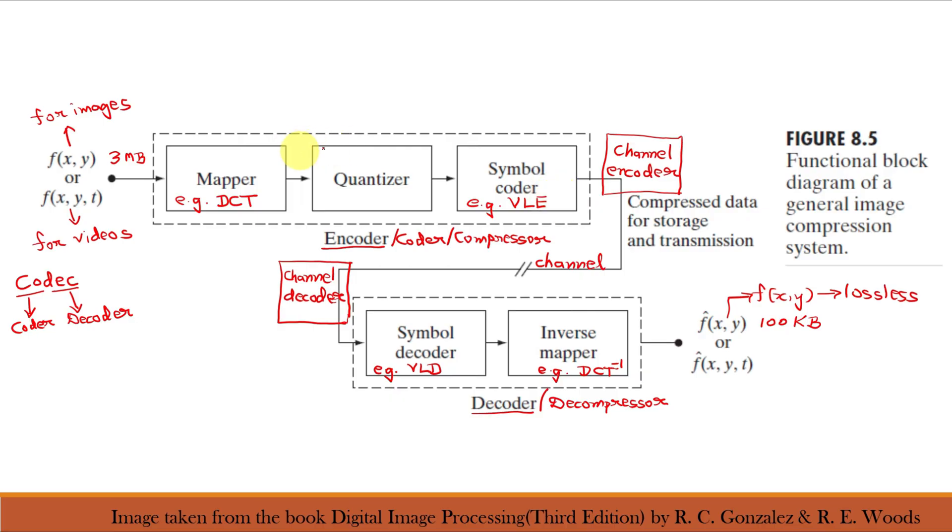The mapper reduces interpixel redundancy. The quantizer reduces psycho-visual redundancy, while the symbol coder reduces coding redundancy.